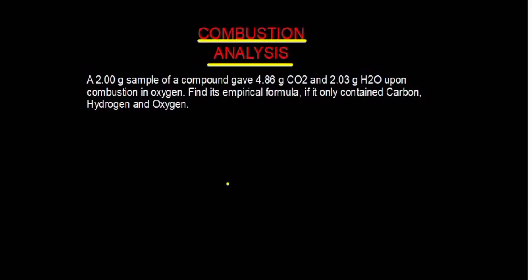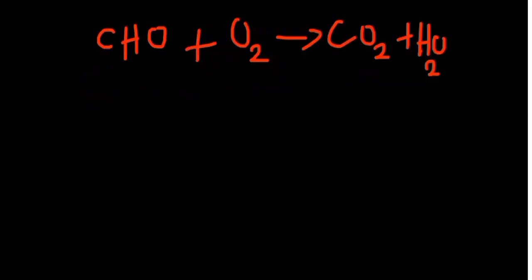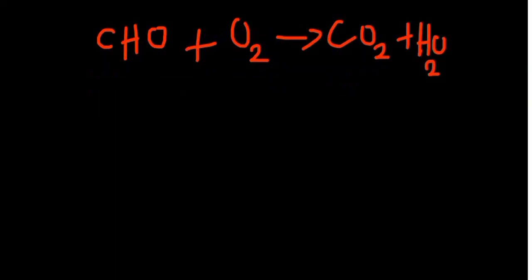In this tutorial, we are going to talk about combustion analysis. Combustion analysis involves burning a compound of unknown formula, but we know the elements that make up that compound. For example, it can be told that a compound contains carbon, hydrogen, and oxygen, but you don't know the ratio in which they are.